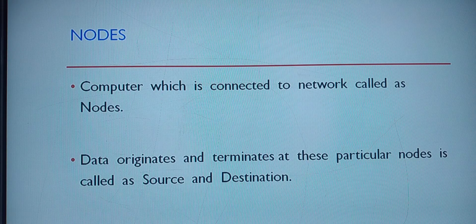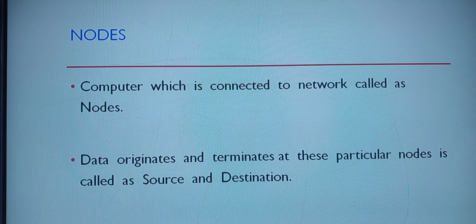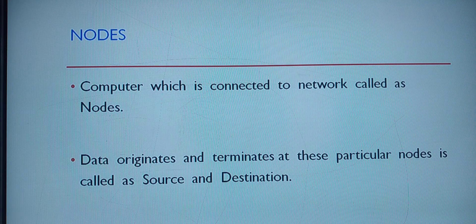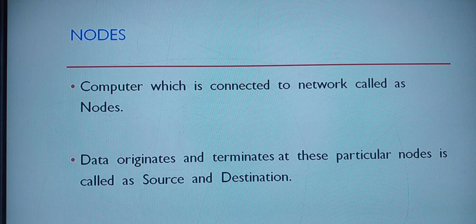What do you mean by node? A computer which is connected to a network is called a node. An individual computer is called a personal computer — a PC. If the same computer is connected in a network, it is called a node. For the purpose of a node, you have a source and a destination. Source is where the data originates, and destination is where the data terminates.